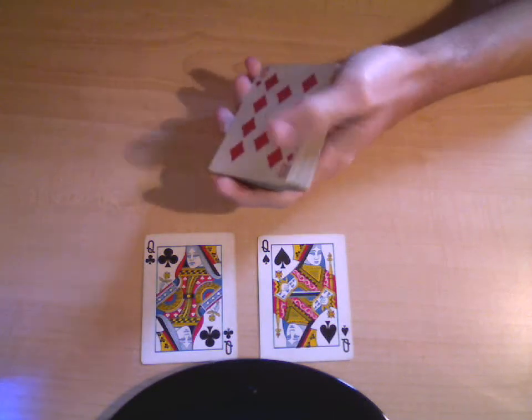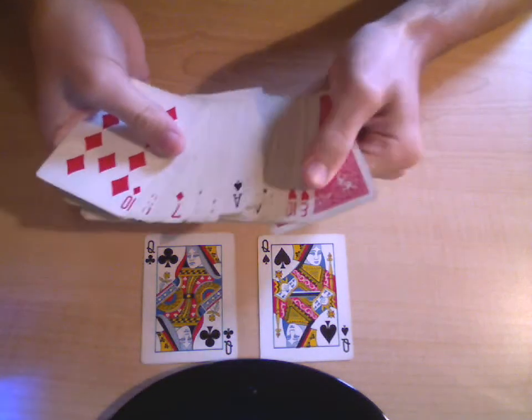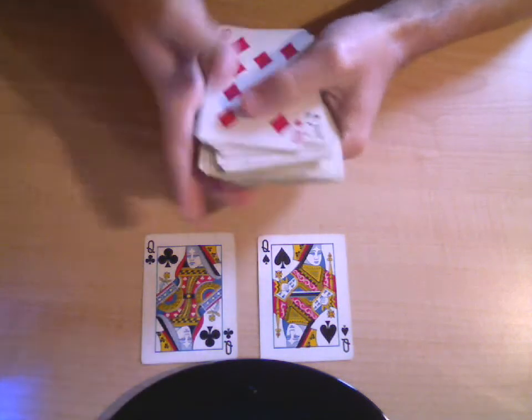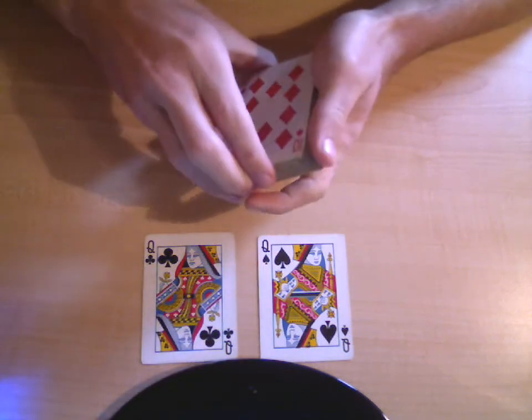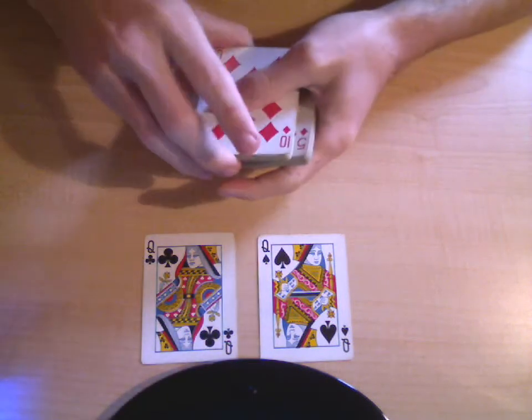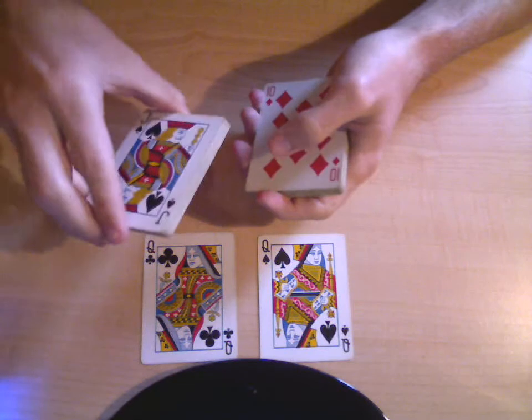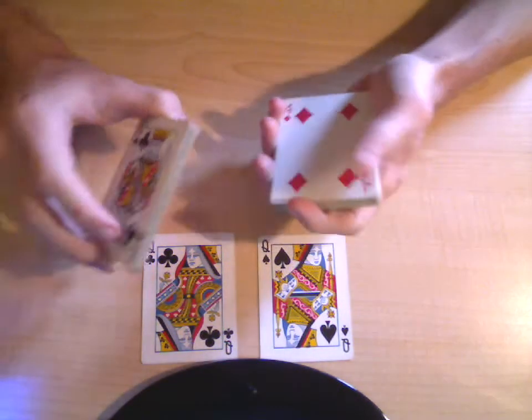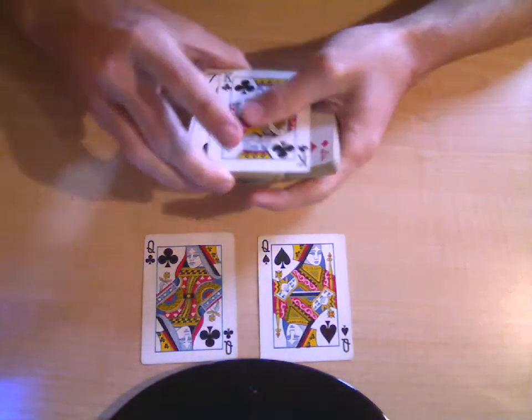And then instead of spreading it out, you can say I'm going to do it differently. So what you do is you break off half the pack and you keep this one because this has the indifferent card on it. And you start peeling cards off like this. You hold it in a Biddle Grip and start peeling cards off.